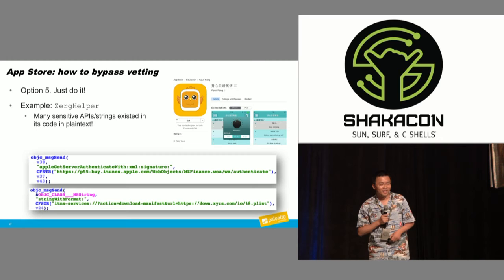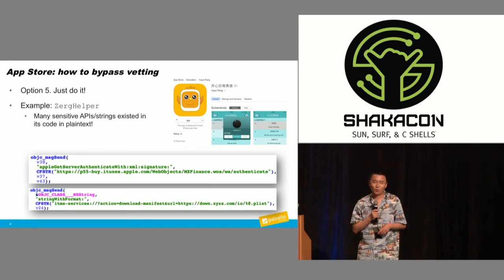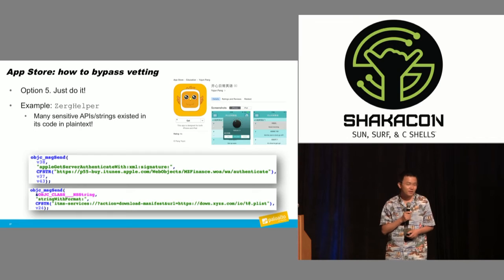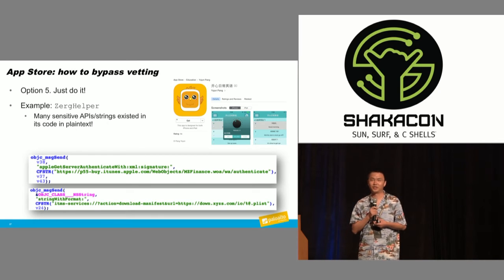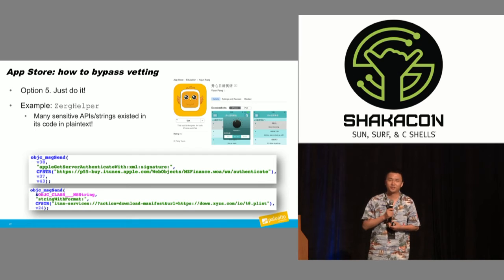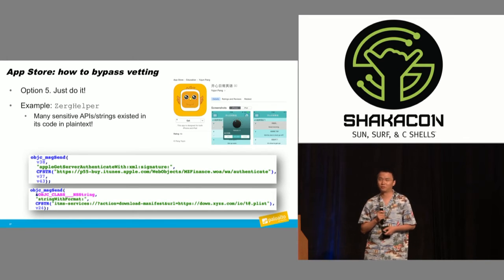The last method is to just do it — App Store code review is far from what we thought. It's not restrictive at all. For example, one malware contains so many sensitive APIs and sensitive strings in plain text that you could write many rules to detect it — that's actually how I found it. But it bypassed the App Store review again and again. I really doubt the code review even exists.